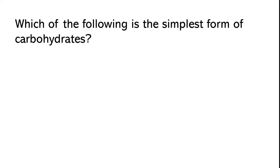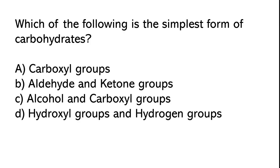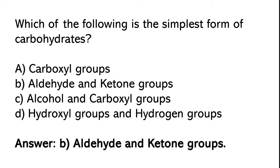Which of the following is the simplest form of carbohydrates? Carboxyl groups, aldehyde and ketone groups, alcohol and carboxyl groups, hydroxyl groups and hydrogen groups. The correct answer is option B: Aldehyde and ketone groups.